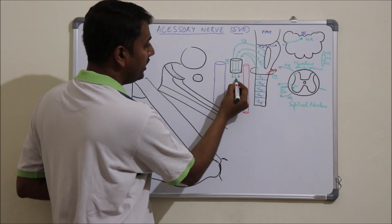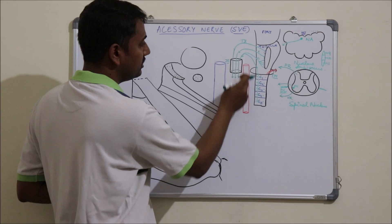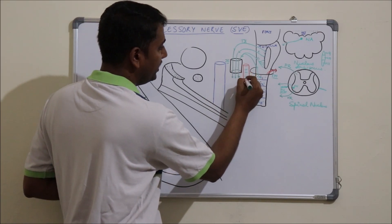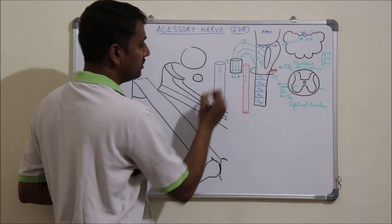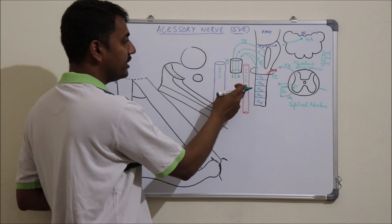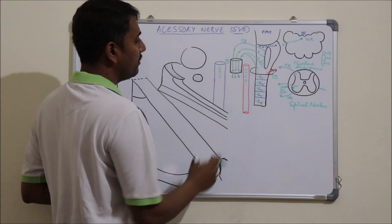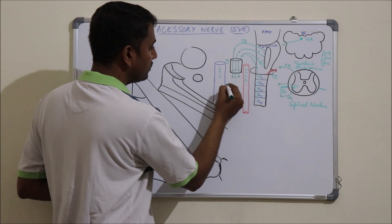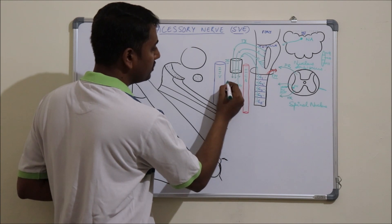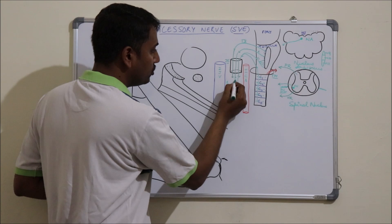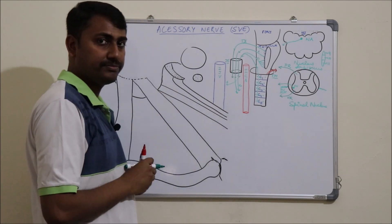After exiting the jugular foramen, all three cranial nerves — 9th, 10th, and 11th — lie between the internal carotid artery medially and the internal jugular vein laterally. When the 11th cranial nerve comes out from the jugular foramen, it again divides into a spinal part and a cranial part.